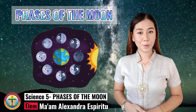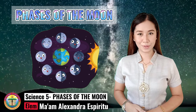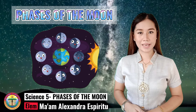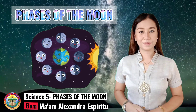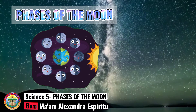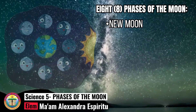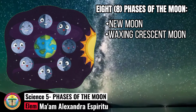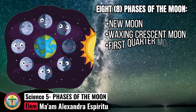Let us know more about the phases of the Moon. There are eight phases of the Moon. These are: New Moon, Waxing Crescent Moon, First Quarter Moon,